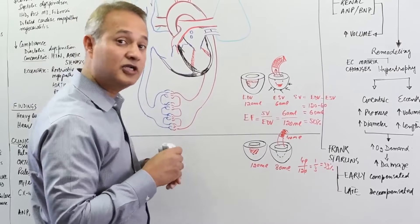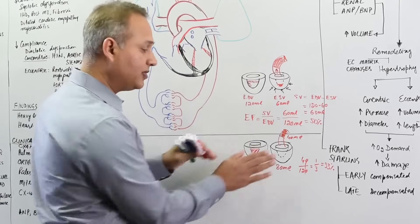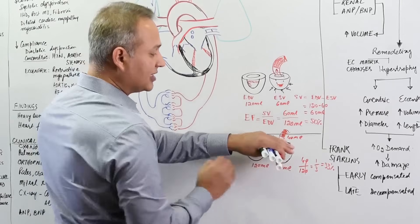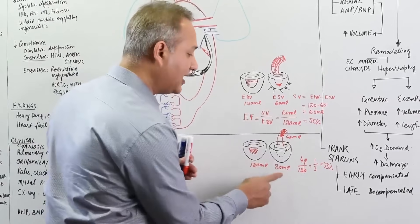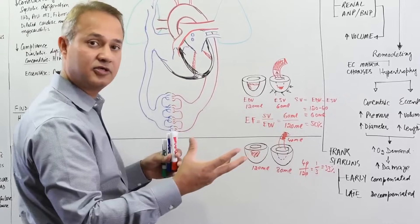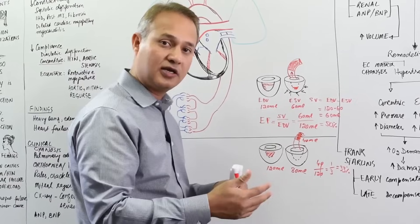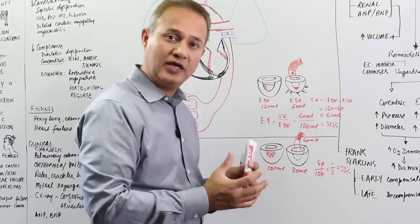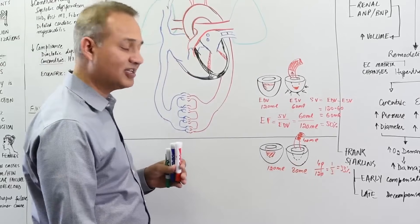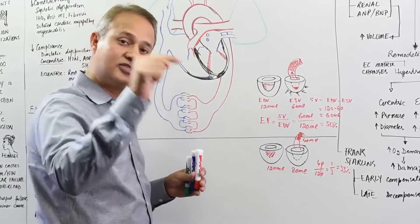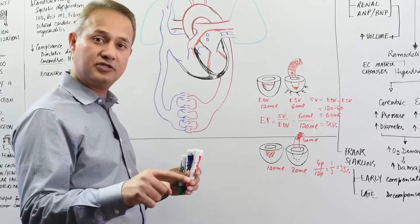Is 33 percent a good ejection fraction? No. You might look at the output in absolute terms and think it sounds fine, but the ejection fraction tells you what percentage of the available blood the heart actually ejected. This heart did not perform well — 33 percent ejection is called systolic dysfunction.